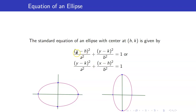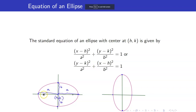If a appears with the variable x, that means you have a horizontal ellipse. This is our center (h, k). The major axis will be a horizontal line. The vertices will appear a units away from your center. The endpoints of your minor axis will be b units away from your center. Your focus will be c units away from your center, and it has to lie along the major axis.